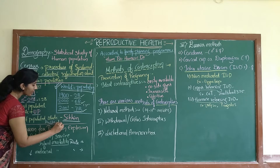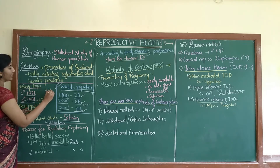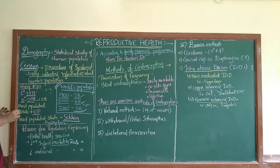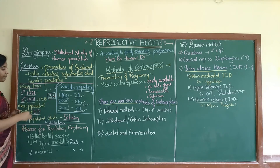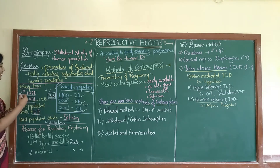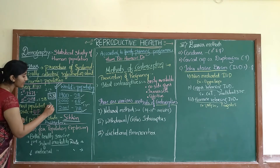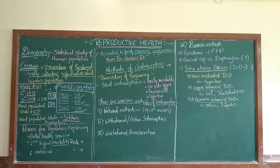Doubling time means the time taken to double the population. From 1 billion to 2 billion, or 2 billion to 4 billion, the population was doubling every 33 years. Due to population explosion, the doubling period has now reduced to 30 years. So what are the reasons why population explosion is taking place? The first reason is better health services.